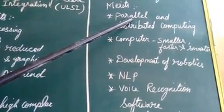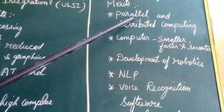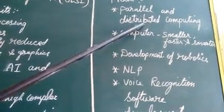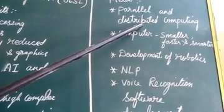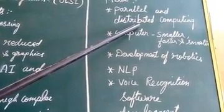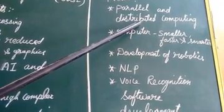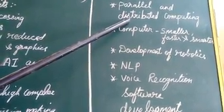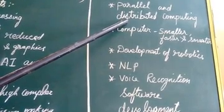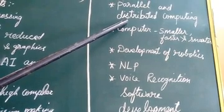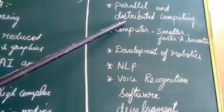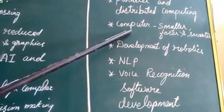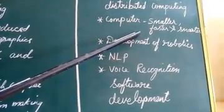This is parallel computing — tasks processed simultaneously. Distributed computing is a separate concept: it is a world of computers that you connect and use together. Computers are becoming very fast and smarter with each generation.